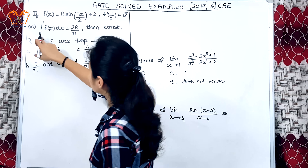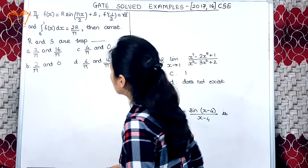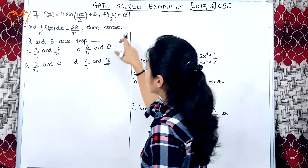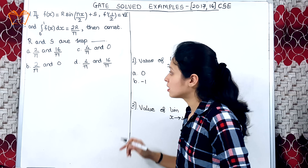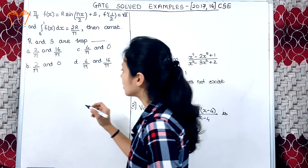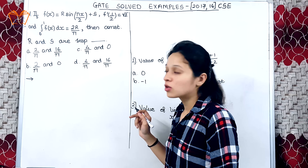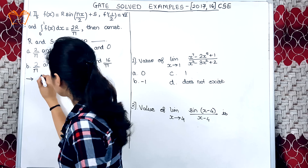First example: if f(x) is equal to r·sin(πx/2) + s, f'(1/2) is equal to √2, and the integration from 0 to 1 of f(x) dx is equal to 2r divided by π, then find the values of constants r and s respectively.